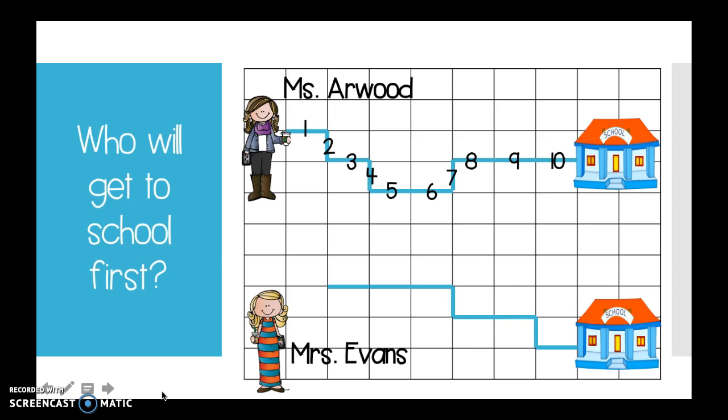Now, I wonder if Mrs. Evans has a shorter path or a longer path to get to school. How could I figure it out? What would I do to Mrs. Evans' path? You're right. I'd have to count it just like I did mine. I'm just going to count using those blocks. Here we go. I'm going to have you go ahead and count it. Press pause. Press play when you're done to check yourself.